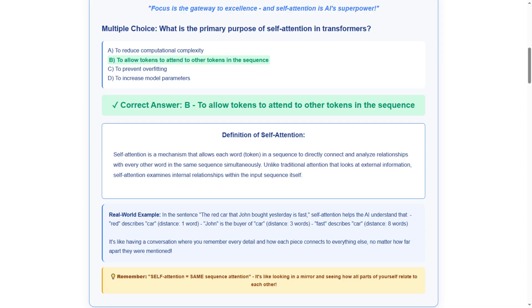The correct answer is B, to allow tokens to attend to other tokens in the sequence. We chose this answer because self-attention is fundamentally about creating connections and relationships between different parts of the input sequence, allowing each word to understand its context by examining every other word simultaneously.